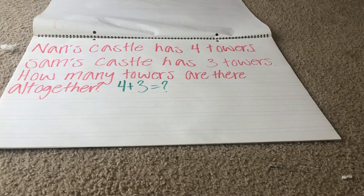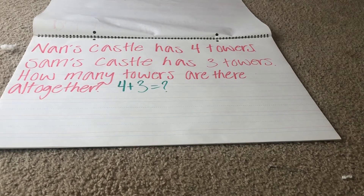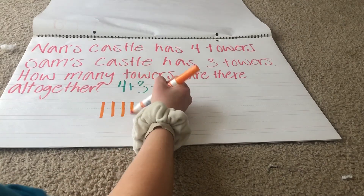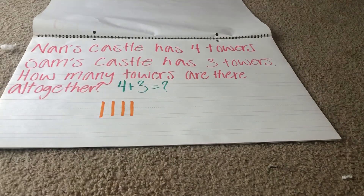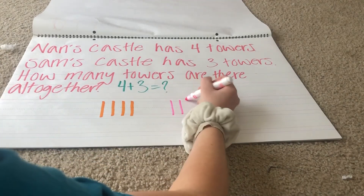We are going to do two different colors again. But since these are towers, I'm going to do our tally method. First we've got four — one, two, three, four. And then we've got three — one, two, three.